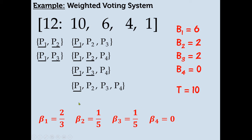Here are all the players' Banzhaf power values. Player 2's Banzhaf power is 2 over 10, which reduces to 1/5. Player 3 is the same — 1/5. Player 4 is 0 over 10, which reduces to 0.